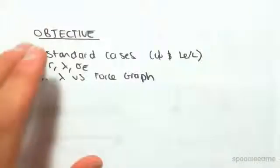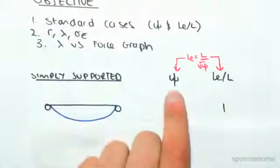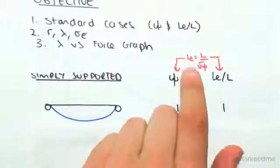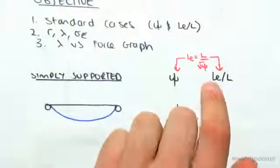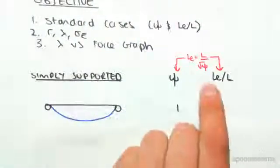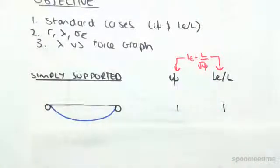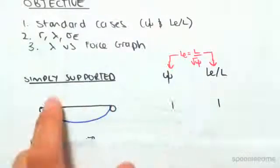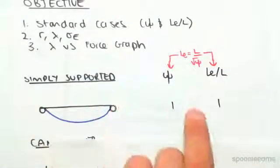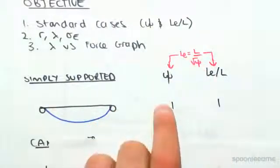To do this, you have to know some standard cases. We have a simply supported beam. I've got here psi, which is related to this formula here. We have LE, which is the effective length on L. For a simply supported beam, LE on L is 1. The effective length is essentially a length between points of inflection of a beam. This has points of inflection, so its effective length is the same as its actual length, which is just LE on L equals 1. You can find psi using this formula here and rearrange it to get 1.